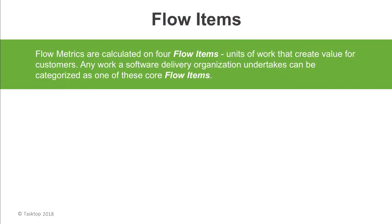So what do the flow metrics measure? They measure the output a value stream produces. You could say that people are working on requirements, tasks, use cases, stories, incidents, and vulnerabilities, but that is often too in the weeds for these type of discussions. At the end of the day, any work a software delivery organization undertakes needs to be expressed in terms of the value your customers get from it, and in any IT organization all the work can be rolled up into one of these four flow item types.